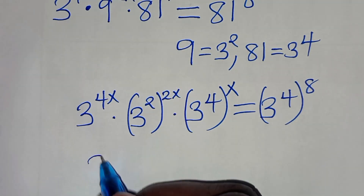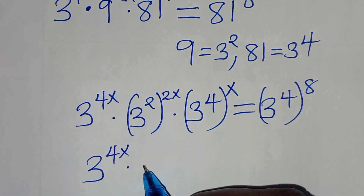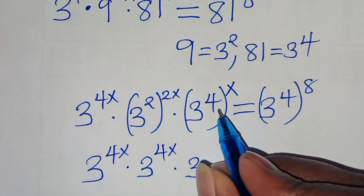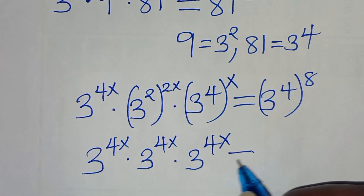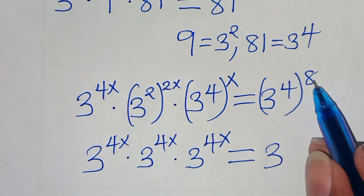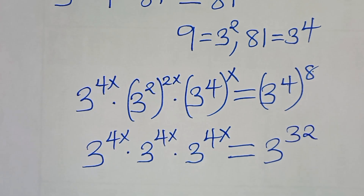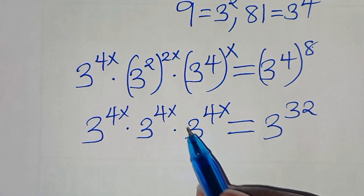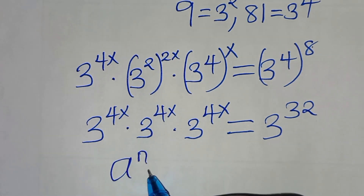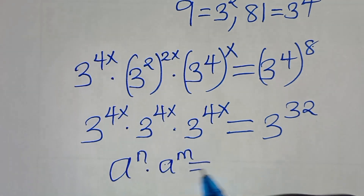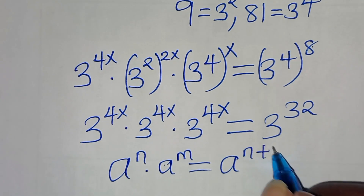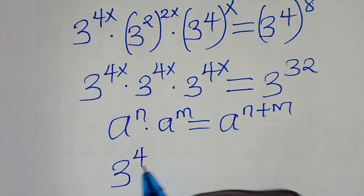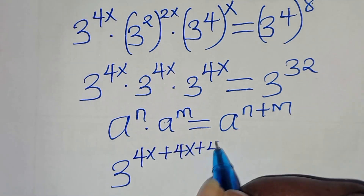This implies we have 3 to the power of 4x, multiplied by 3 to the power of 2 times 2x — which is 4x — multiplied by 3 to the power of 4 times x, which is 4x, equal to 3 to the power of 8 times 4, which is 32. Since this is in the form a to the power of n times a to the power of m, applying the exponent product property, we have 3 to the power of 4x plus 4x plus 4x, equal to 3 to the power of 32.